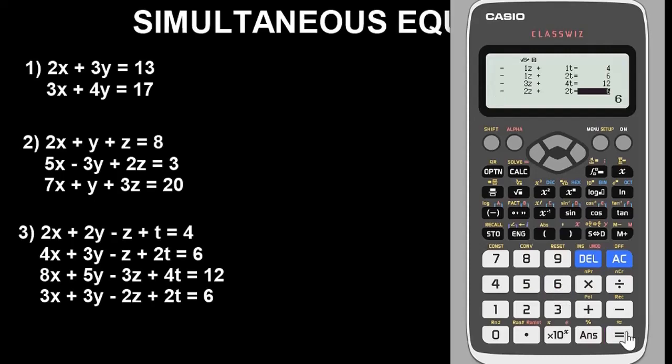Now press equals to get our results for question three. x equals one, y equals one, z equals minus one, and t equals minus one. That is basically how you can solve problems involving simultaneous equations with the Casio fx-991ES calculator.